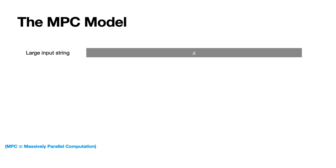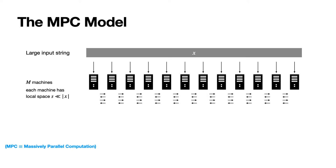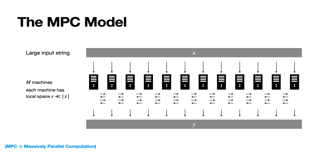I'm going to introduce a model called the massively parallel computation model, which has more or less become the de facto standard model used by the algorithms community when studying the type of distributed algorithms that run inside data centers. In this model, we assume we have a large input string and a set of machines, each of which have local space that is much smaller than the input size. This input gets divided among the machines, which then run a distributed algorithm, or a protocol, and collectively come up with an output which is defined to be the concatenation of the local outputs of each machine.